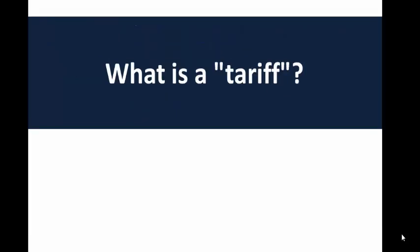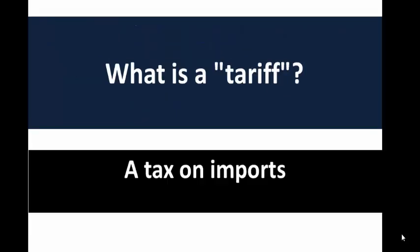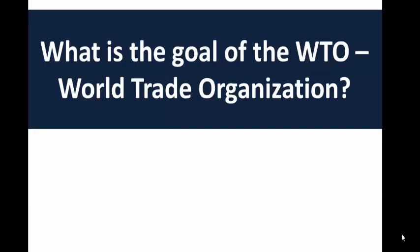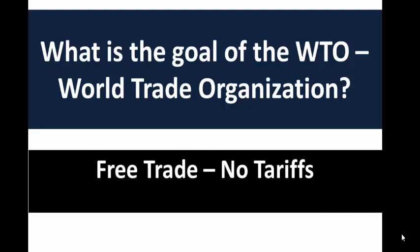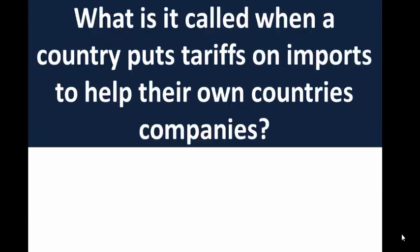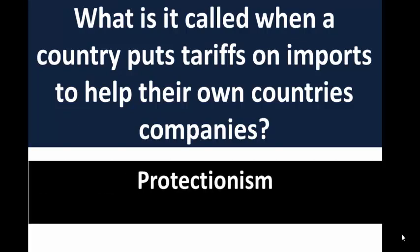What is a tariff? A tariff is a tax on imports — used to be a big thing, not so much anymore. What is the goal of the WTO — the World Trade Organization? It's about free trade and getting rid of tariffs, keeping costs down. What is it called when a country puts tariffs on imports to help their own companies and businesses? They are protecting them, so it's called protectionism.